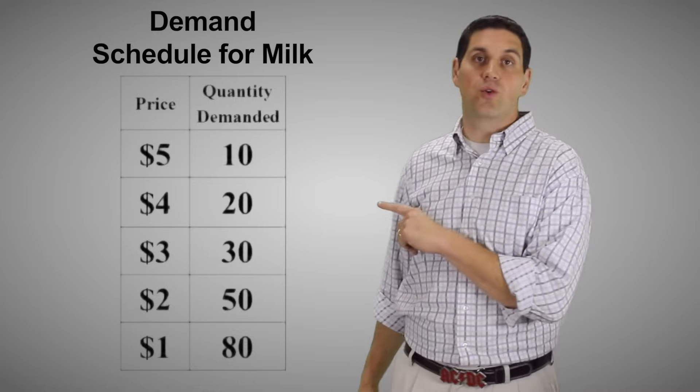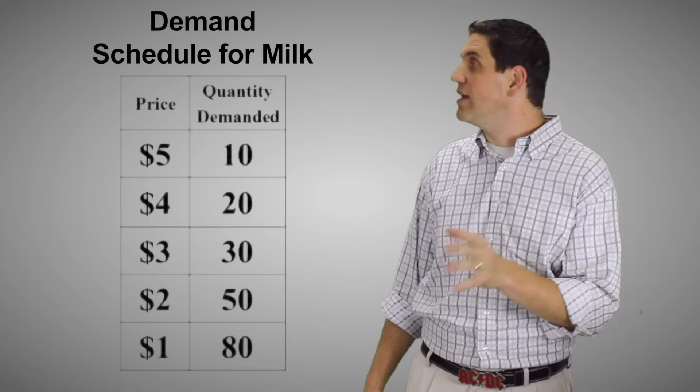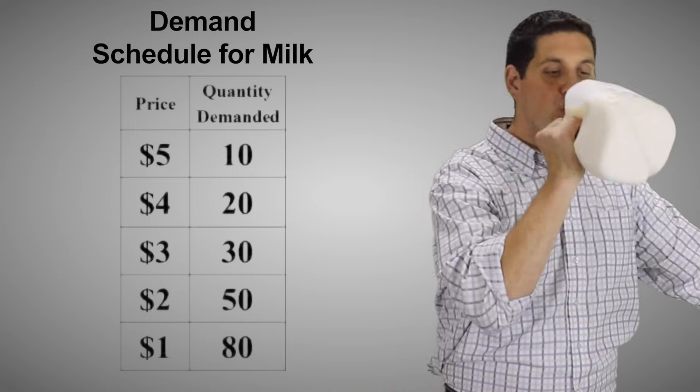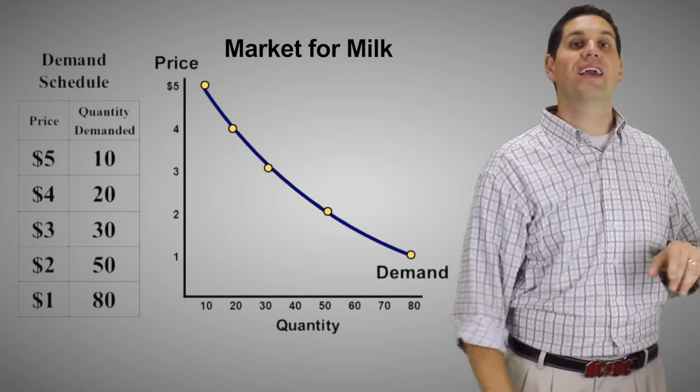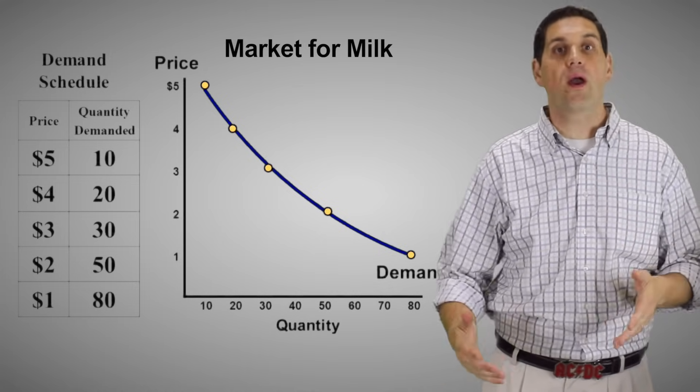So take a look at this demand schedule. As you can see, when the price goes down, the quantity demanded goes up. When the price goes down to four, three, two, and one, the quantity demanded increases. Now when you plot these points, you're going to get a demand curve, which looks like this. It's a downward sloping curve showing the law of demand.